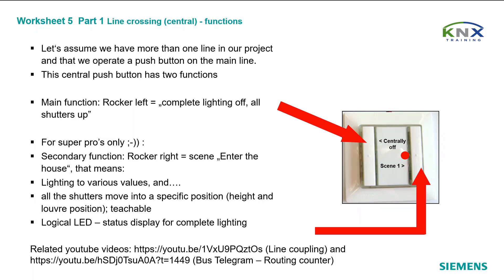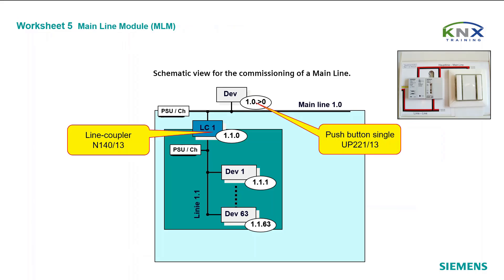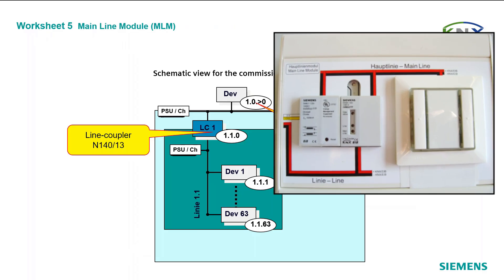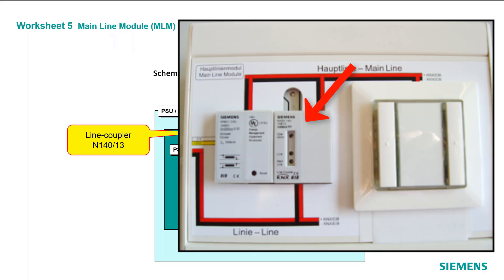Height and louver position are teachable. There is also a logical LED status display for complete lighting. If you want to repeat the theory, you might have a look at the linked videos — see links in the video description text. For our task, we have a so-called main line module: a box containing a line coupler, a choke, and a single rocker push button.